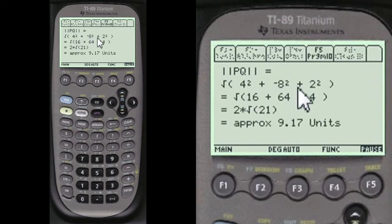Turns out to be this, this, this, 16, 64, 4, 2 times square root of 21, approximately 9.17 units.